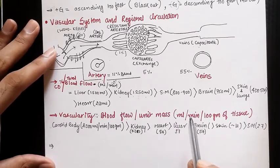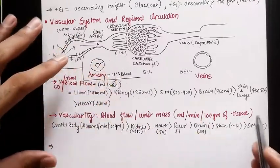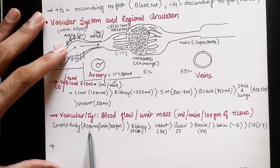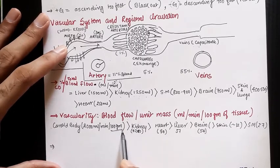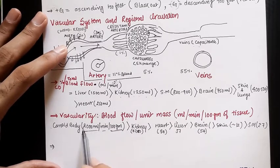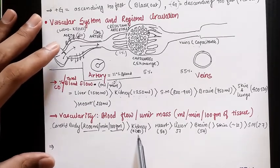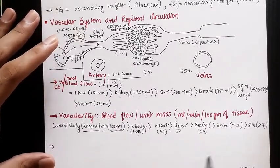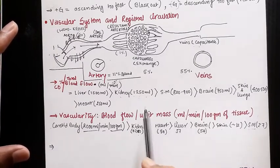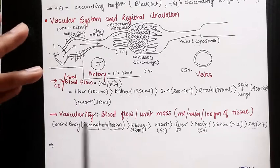Vascularity refers to blood flow per unit mass per minute — how much blood flows through an organ per 100 grams of tissue per minute. Maximum vascularity is in the carotid body at 2000 ml per minute per 100 g of tissue. Then comes the kidney at 420 ml/min/100g, followed by the heart, liver, brain, skin, and skeletal muscles. Note that kidney and liver have a higher share of cardiac output and higher vascularity compared to the brain.